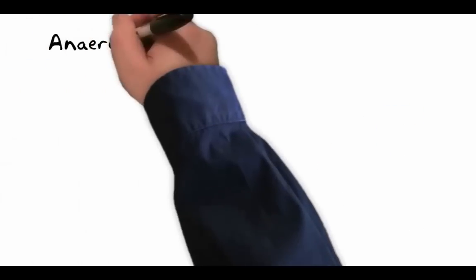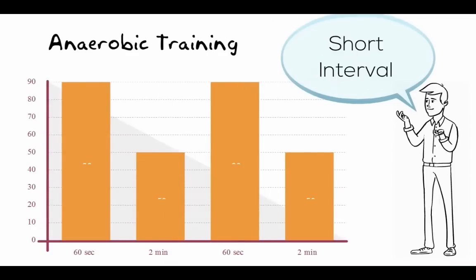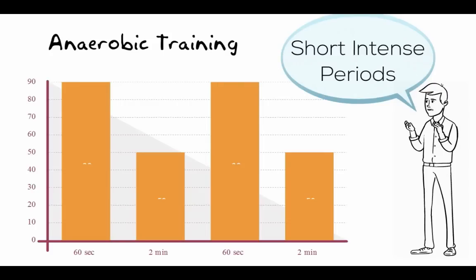For anaerobic training, you need to know the short interval training method. Though the ratio can change, this method normally has a 1 to 2 ratio with short intense work periods and longer rest periods. This is the opposite of the long interval aerobic training method.